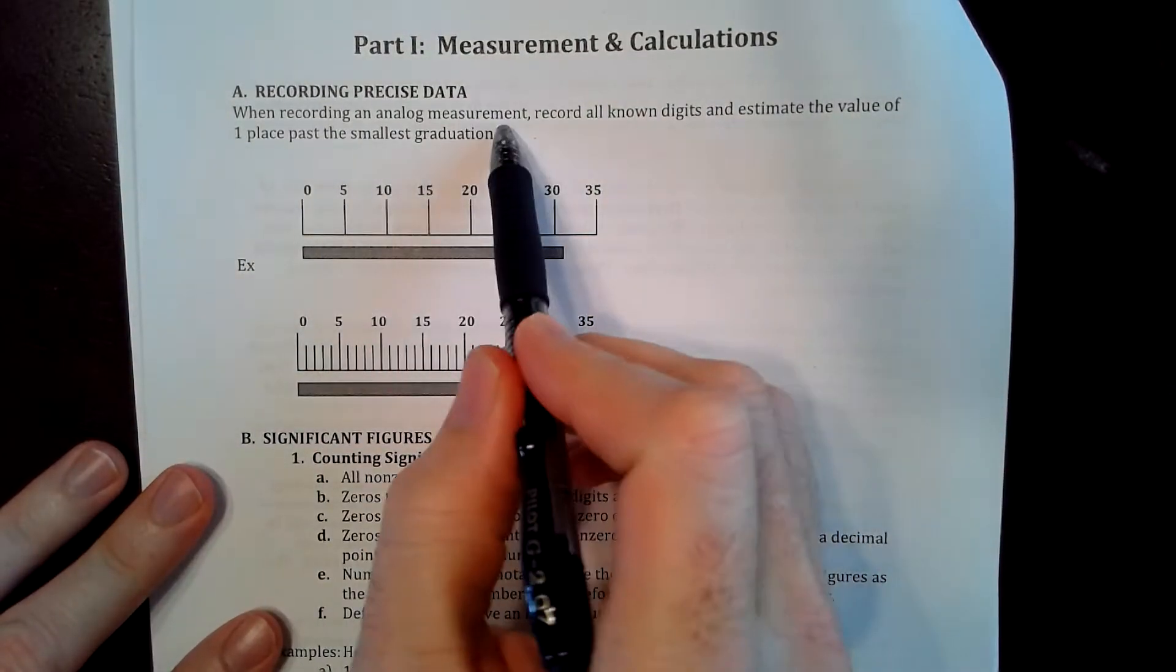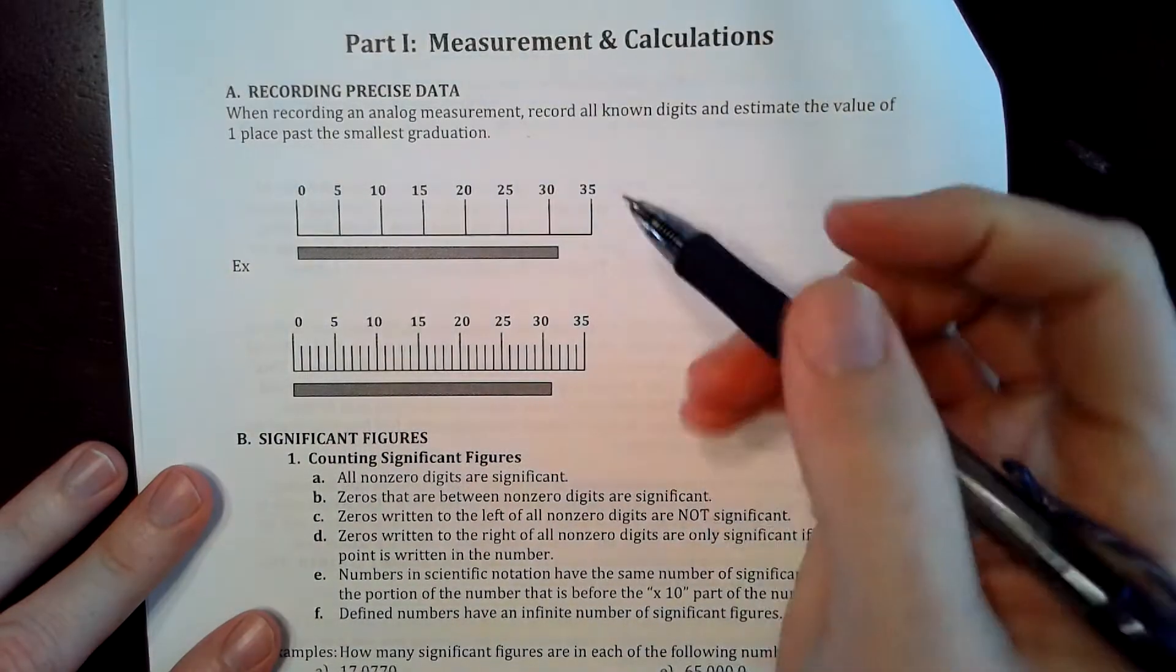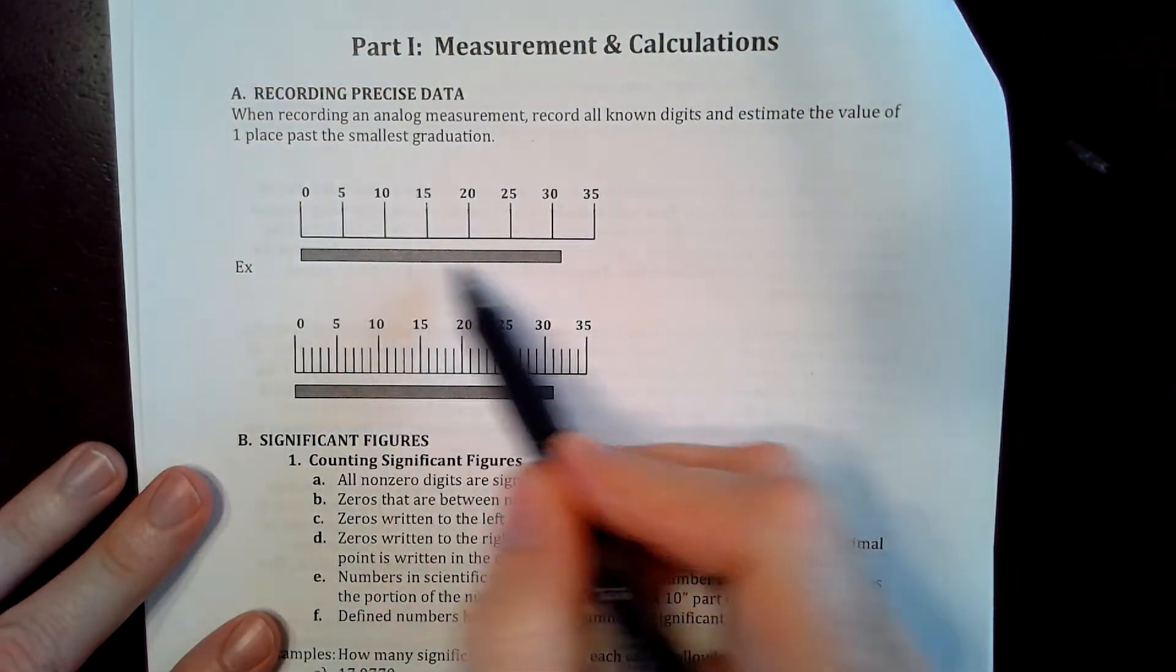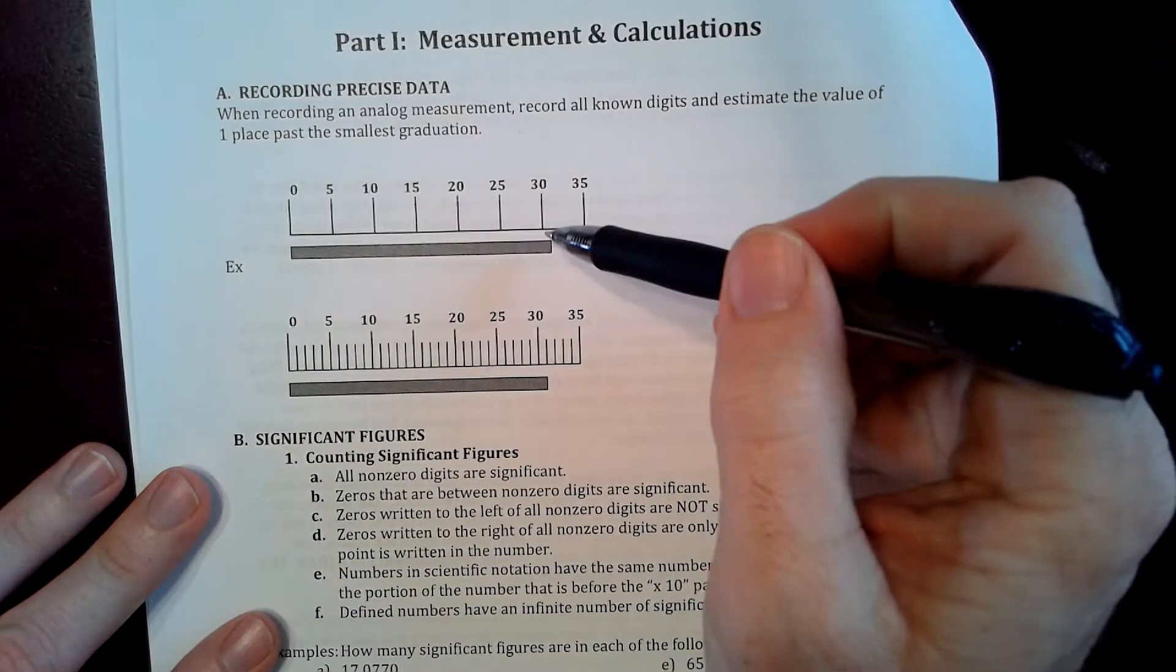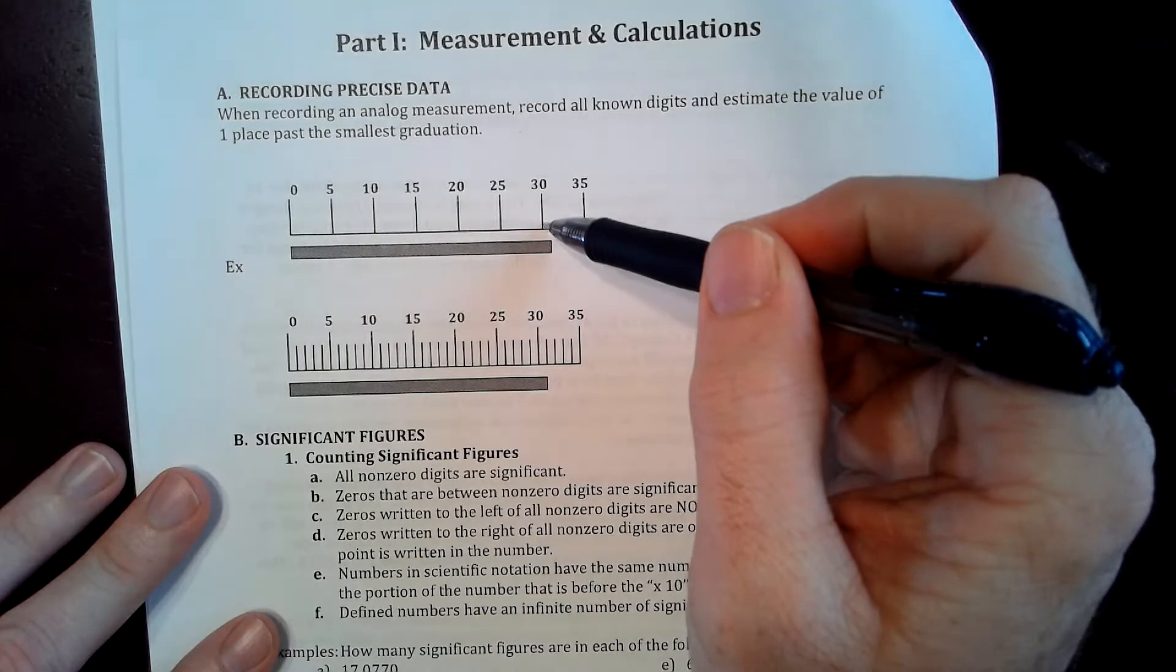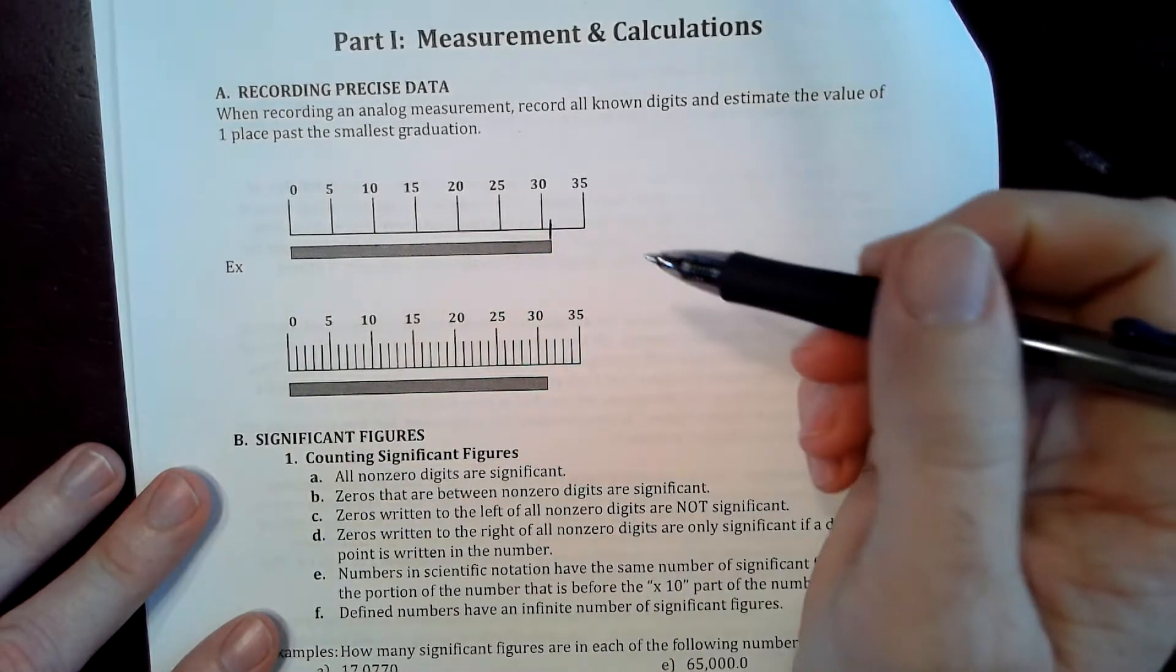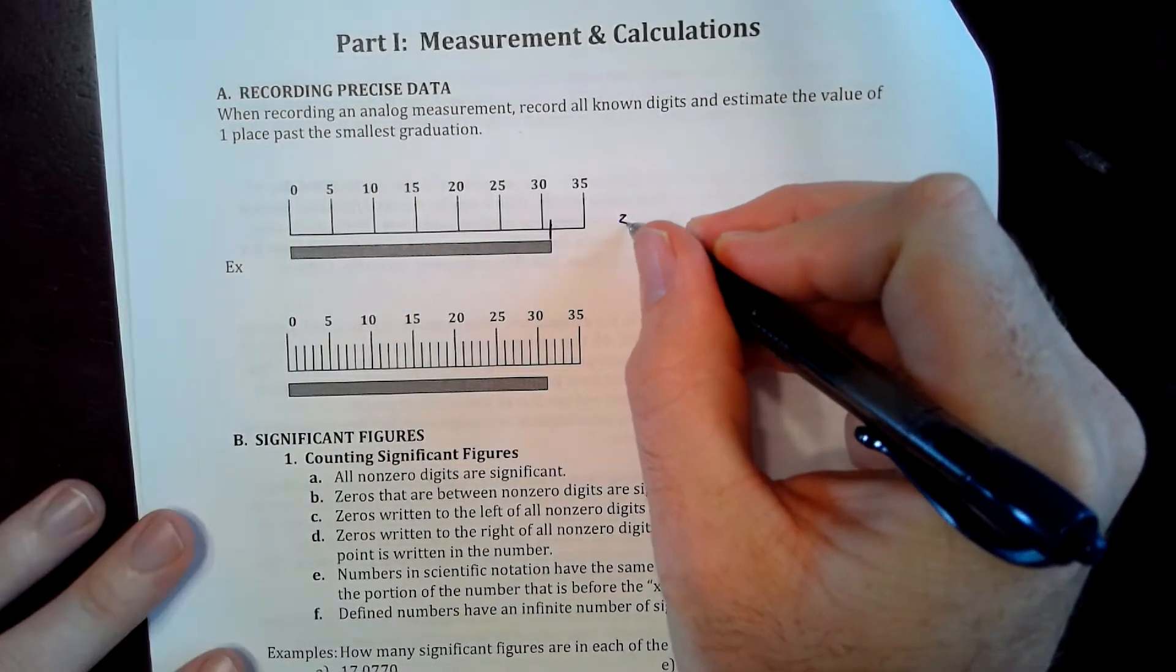When we're recording precise data with analog instruments, I will teach you later how to use and look at uncertainty. But right now we're only looking at how long this little gray box is. Remember that you'll just have to make your own best judgment. It's going to be right about here, so I am going to guess that's 31.